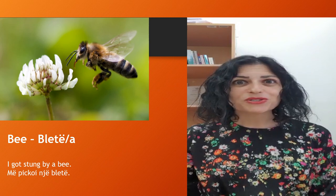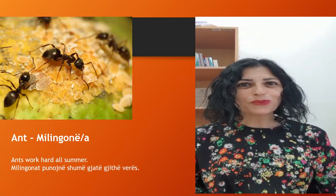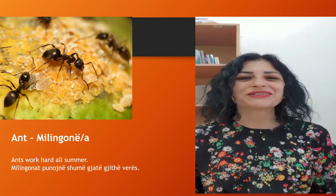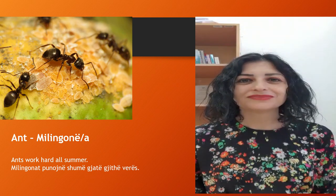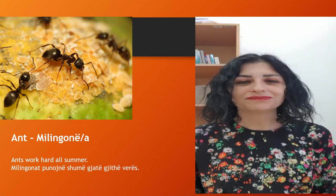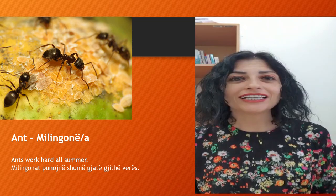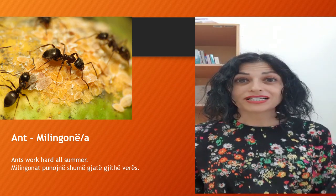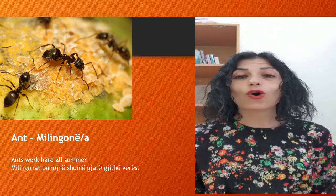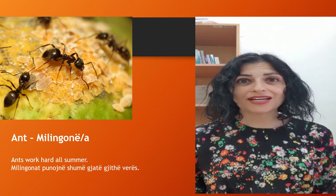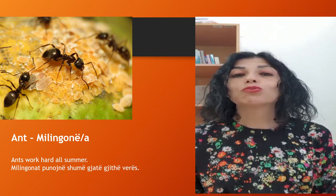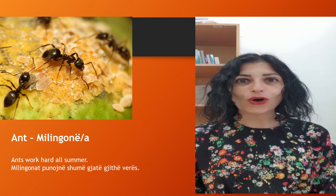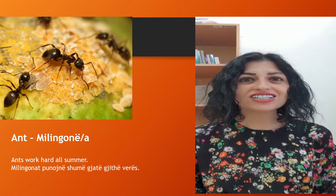Let's go to the next one. This one is the ant. In Albanian it's a very funny word to say: milingon — indefinite form — milingona — definite form. For example, 'ants work hard all summer.' In Albanian we say: milingonat punojnë shumë gjatë verës. Milingonat punojnë shumë gjatë verës.